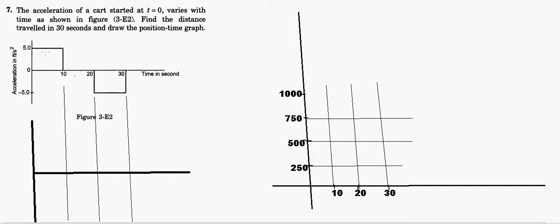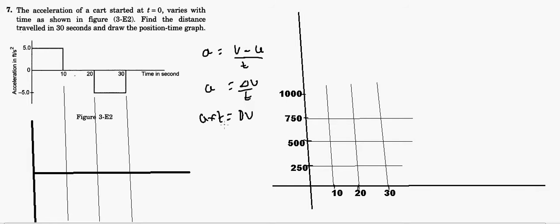The graph shows 5 feet per second squared — okay, 5 feet per second squared. Now, for your information, remember that acceleration is nothing but change in velocity — that is, (v minus u) divided by t. Change in velocity divided by time is the acceleration. So change in velocity corresponds to time.